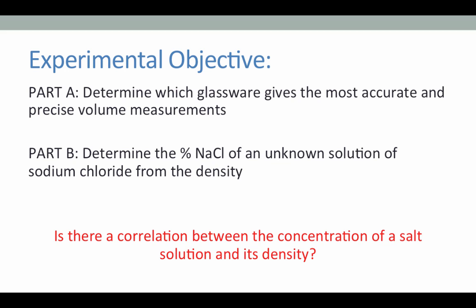The experimental objectives are twofold. In Part A, we will determine which glassware gives the most accurate and precise volume measurements by doing a series of experiments and comparing our data with the rest of the class.